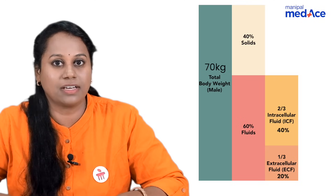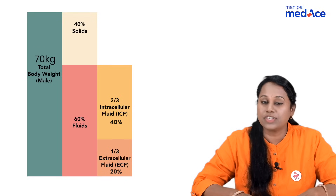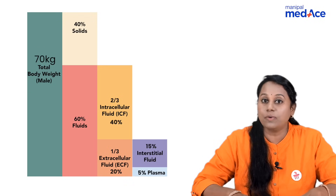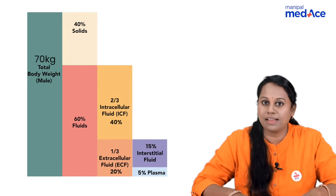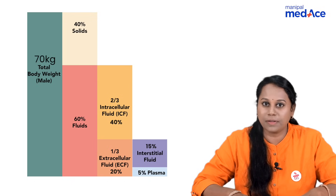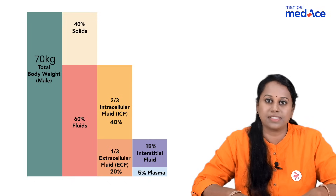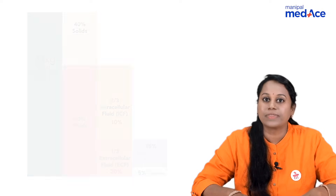ECF is divided into two compartments. The space around the cells is called the interstitium, which is 15%, and outside the cells we have blood vessels. Blood vessels have plasma in them, and plasma is 5%.